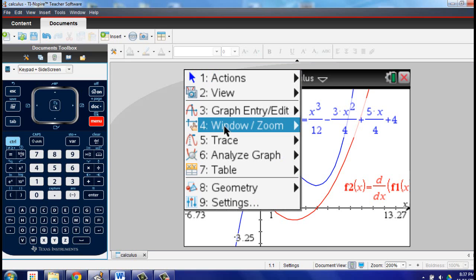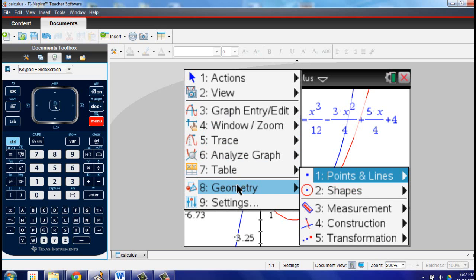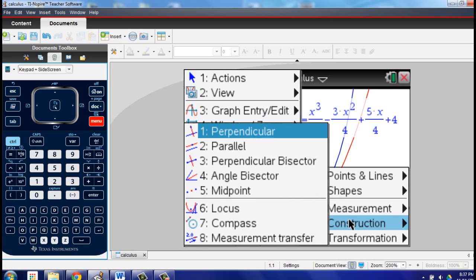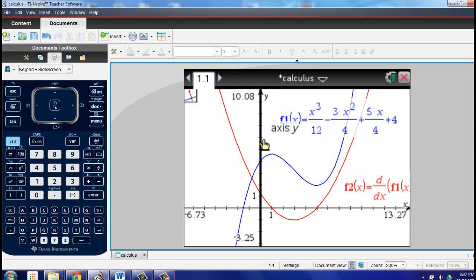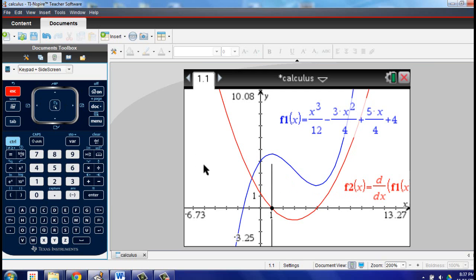So let me show you what I mean. I'm going to go into Menu, Geometry, and then I'm going to construct a perpendicular. When I see Intersection Point, I know that the TI Inspire realizes that I want the intersection point of the first derivative in the X axis. And then I have to tell it what I want the perpendicular to. And of course, I do want it perpendicular to the X axis. I'm going to hit Escape at this point to turn off the perpendicular feature.